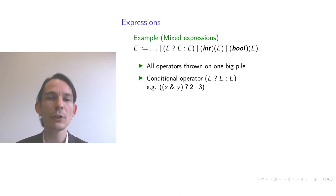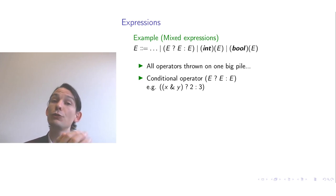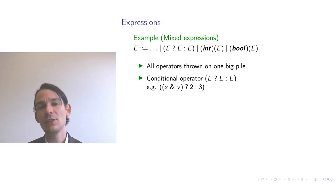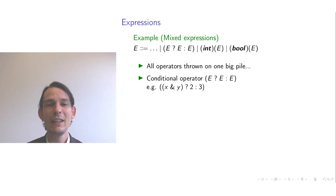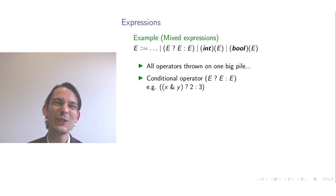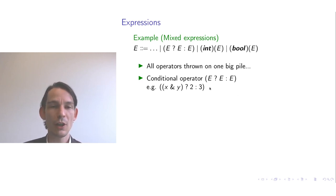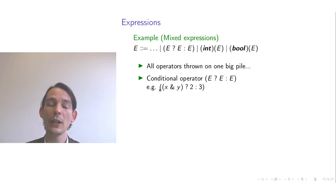Intuitively, the conditional operator queries whether the expression to the left of the question mark evaluates to true. If so, the value of the whole operator becomes the value of the expression to the right of the question mark. But if the first argument is false, then the value becomes that of the third argument — to the right of the colon. For example, if x is false, then x AND y is also false, so the whole conditional operator evaluates to three.